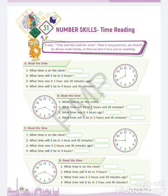What time was it 2 hours and 40 minutes before? We will subtract that — the time will be 6:20. Next: what time will it be in 4 hours after 9 o'clock? 9, 10, 11, 12, 1 — so the answer will be 1 o'clock.